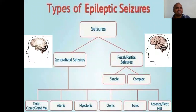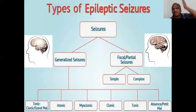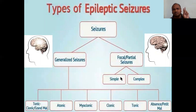Generalized seizures happen on both sides of the brain — almost the entire brain is involved on both sides. Focal or partial seizures happen on one side only — in the frontal lobe, temporal lobe, or other specific lobes. Focal or partial seizures have two subtypes: simple and complex. Generalized seizures have six types.